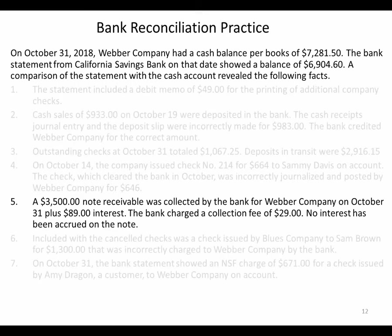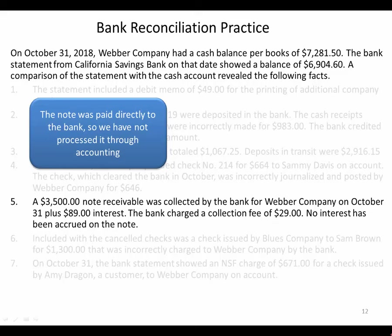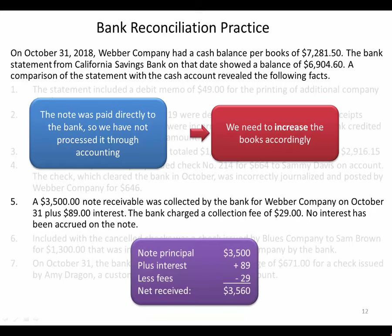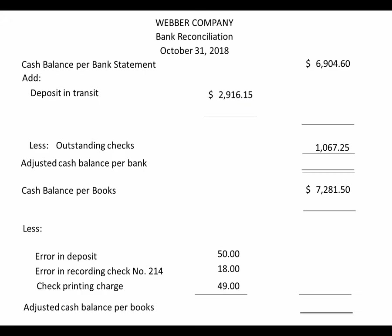Number five: a $3,500 note receivable was collected by the bank for Weber Company, plus $89 interest. The bank charged a collection fee of $29. Somebody owed us money and paid it directly to the bank including interest, but the bank charged us a processing fee of $29. We haven't recorded this yet, so we need to add it into our books. The net amount is $3,500 principal plus $89 interest minus the $29 fee, which comes out to $3,560. This is already in the bank but not in our books, so we add it to our balance per books.